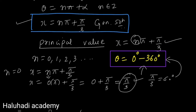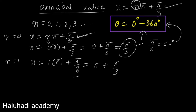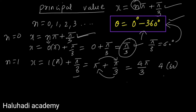For n equals one: x equals 1·π plus π/3. LCM gives (3π + π)/3 equals 4π/3. Converting 4π/3 to degrees: 4 × 60° = 240°, which is in the range 0 to 360°. Therefore 4π/3 is also a principal value.